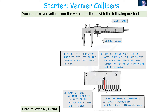Adding the readings together: 1 centimetre plus 3 millimetres (three divisions past the 1 cm mark) plus 0.3 millimetres (where the vernier scale lines up with the main scale) gives 13.3 millimetres, or 1.33 centimetres.